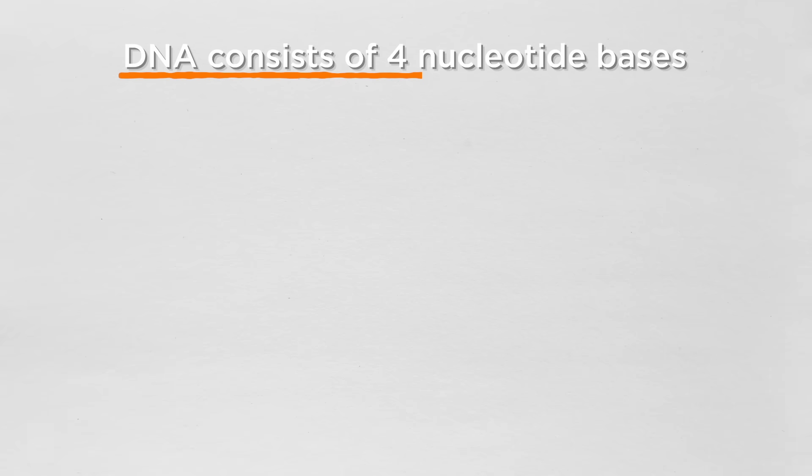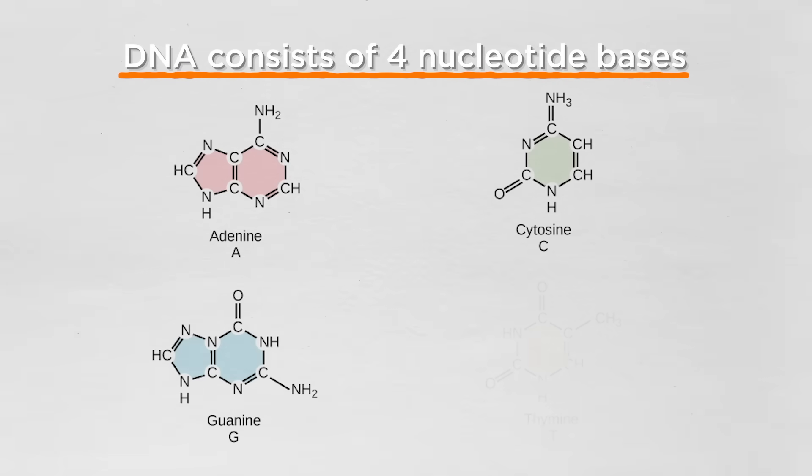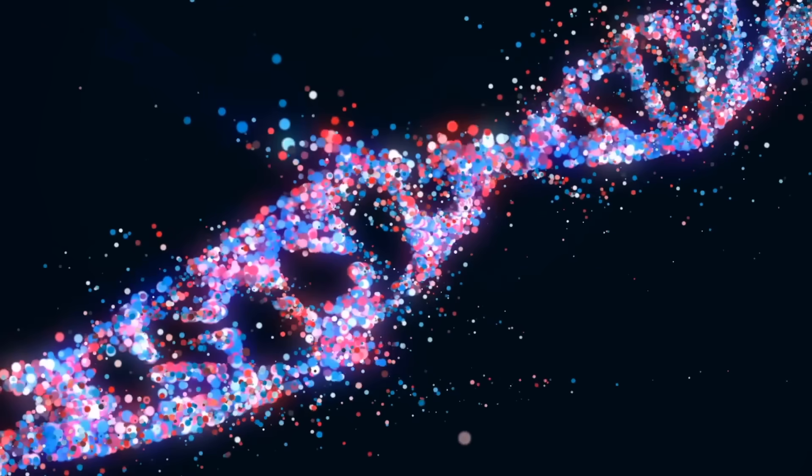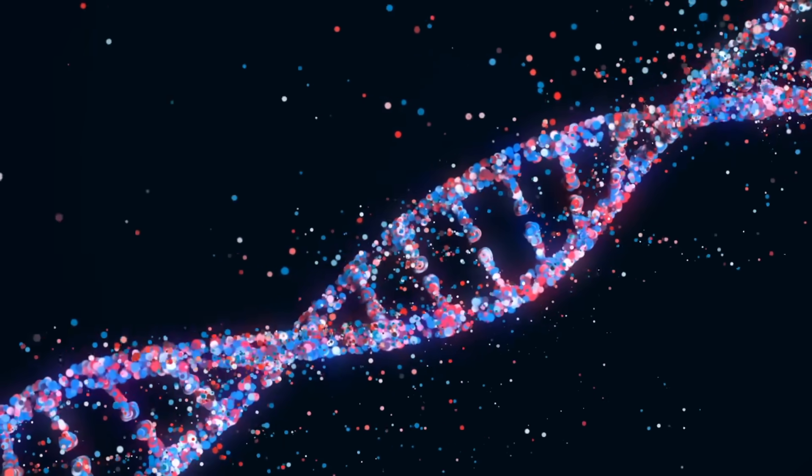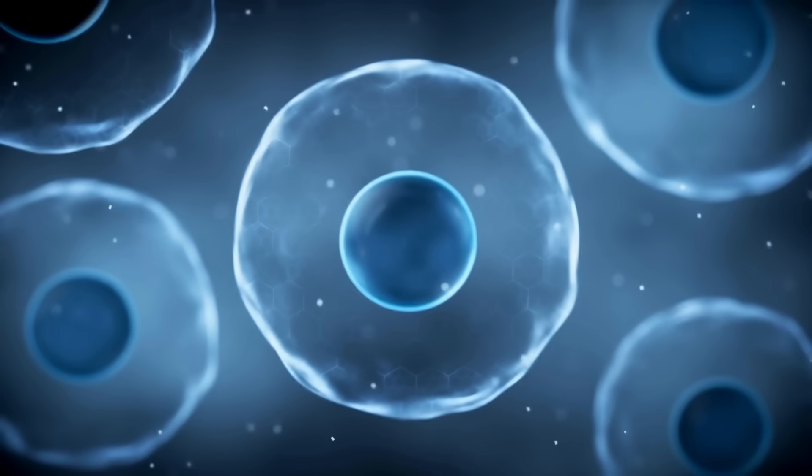DNA, consisting of four nucleotide bases—adenine A, cytosine C, guanine G, and thymine T—can be seen as a symphony of genetic information. Each base holds a distinct role in determining the genetic instructions that shape an organism.